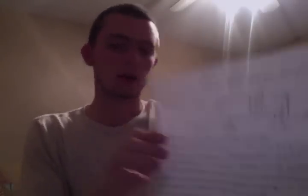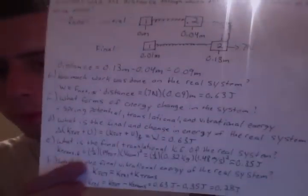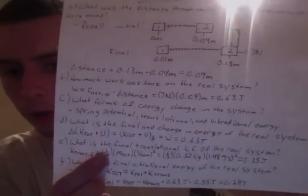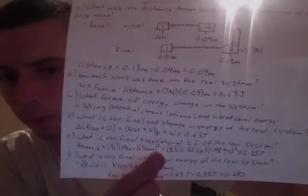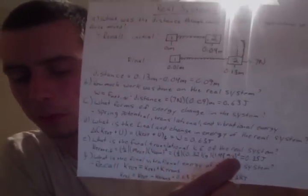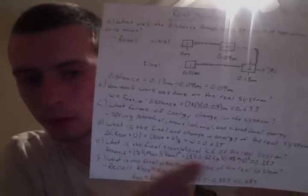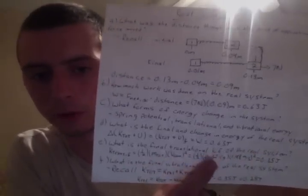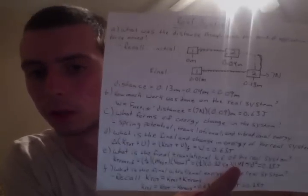Part E is asking for the final translational kinetic energy of the real system. And that's not too bad. Because that's just defined as this right here. And all this pretty much carries over, like all these values carry over from the last problem. And I get this answer here. Notice we found the total mass and this velocity from the last part. Those aren't going to change.